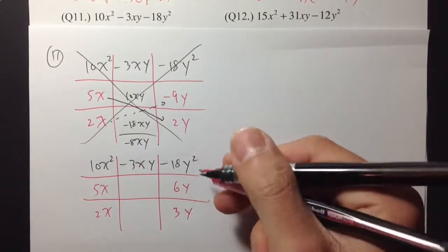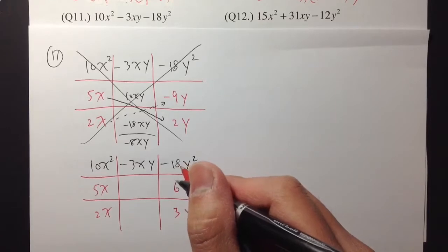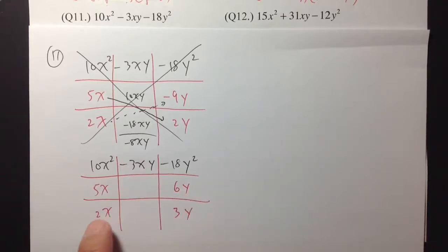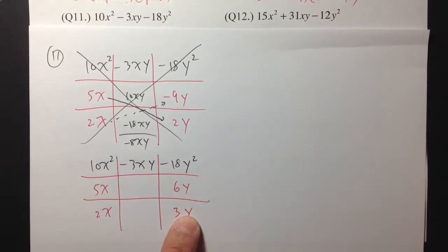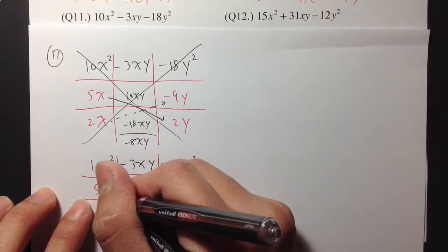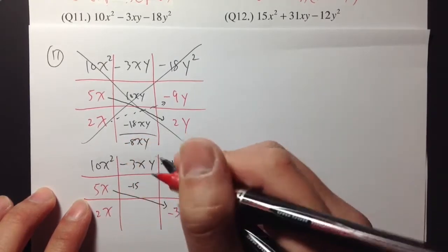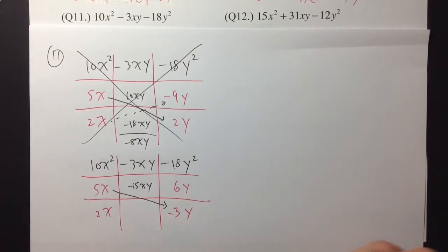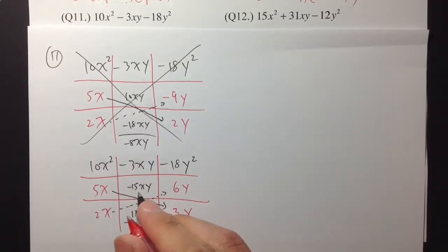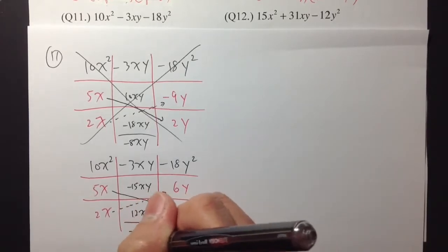And I need to have the y and y to produce y squared. I need to produce a negative 18y, and notice that in the middle I need to have a negative 3. Later on, 2 times 6 will be 12, and 5 times 3 will be 15. I need to make 3 negative. So, 5x times negative 3y is negative 15xy. And then 2x times 6y is 12xy. Negative 15xy plus 12xy is exactly negative 3xy.